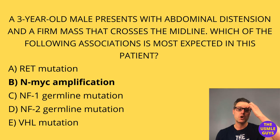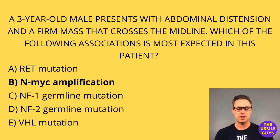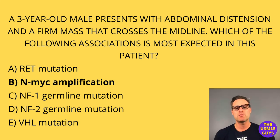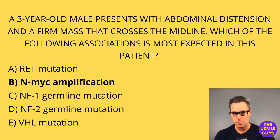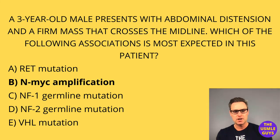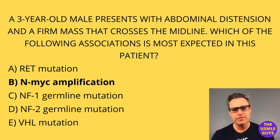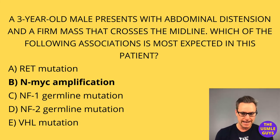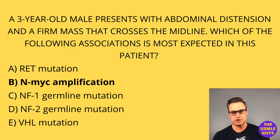Now let's look at pheochromocytoma, the most common adrenal medulla tumor in adults. Unlike the neural crest cell origin of neuroblastoma, pheochromocytoma is derived from chromaffin cells. Germline mutations can be associated with pheochromocytomas — these can include mutations of NF1, RET, and VHL. Symptoms are often caused by the secretion of catecholamines and can include episodic hypertension, and secretion of erythropoietin that can cause polycythemia.